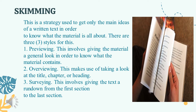The first technique is skimming. It is a strategy used to get only the main ideas of a written text in order to know what the material is all about. There are three styles: previewing, overviewing, and surveying. Previewing involves giving the material a general look; overviewing makes use of taking a look at the title, chapter, or heading; and surveying involves giving the text a rundown from the first section to the last. You don't need to read everything — just locate the main ideas. Skimming is rapid reading to get the general idea.